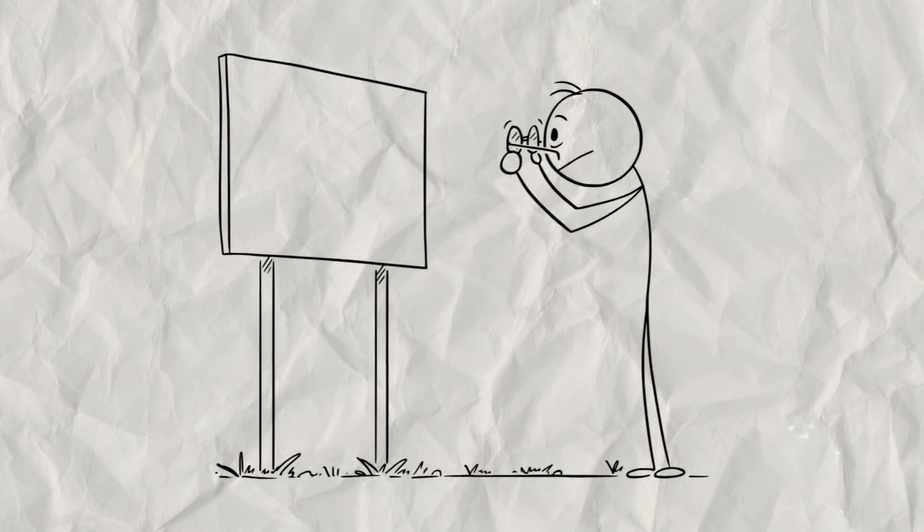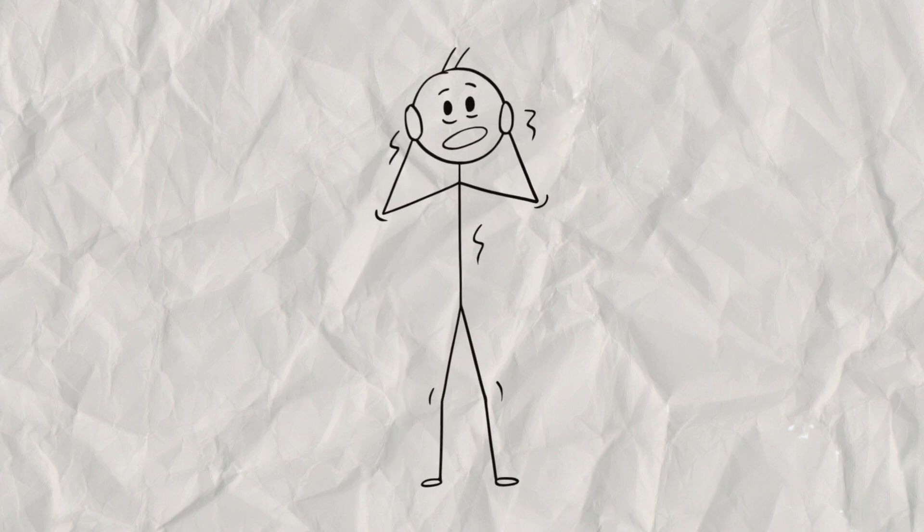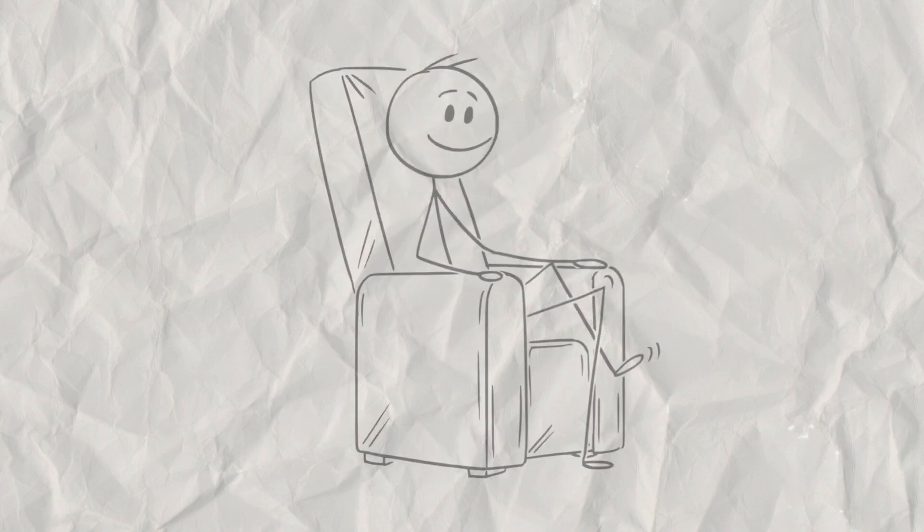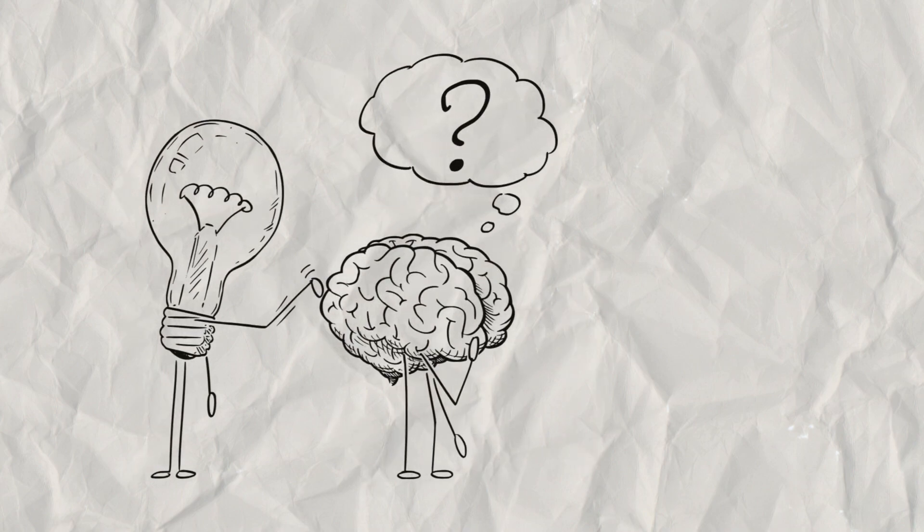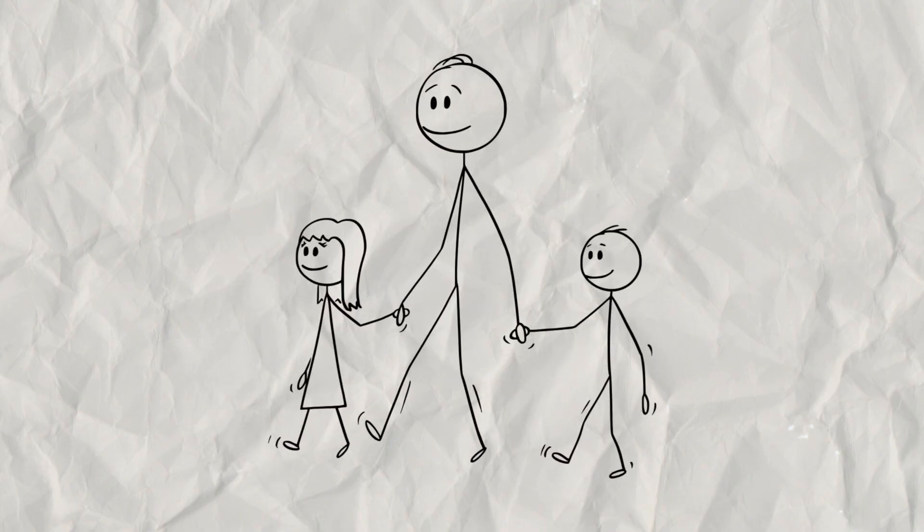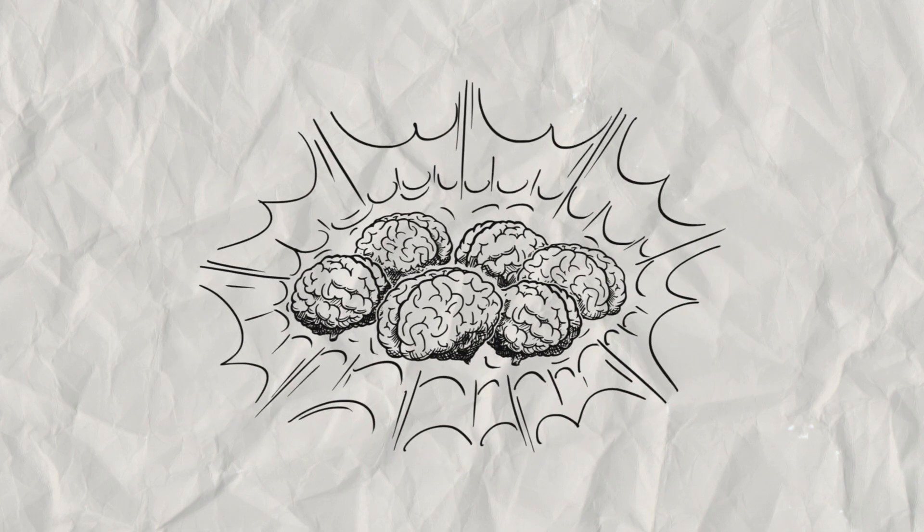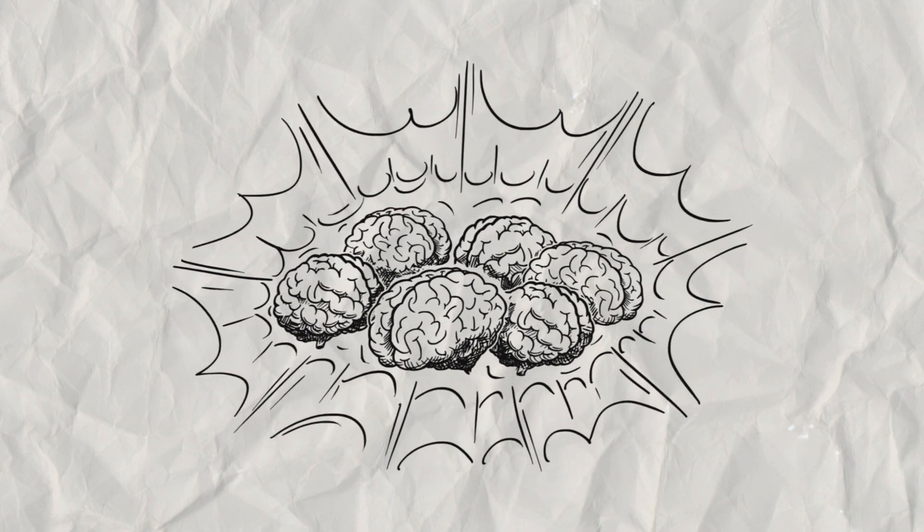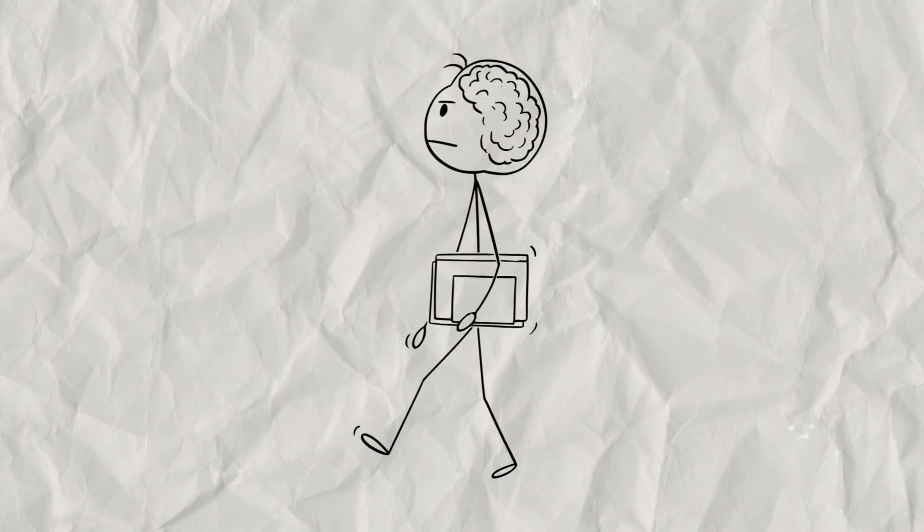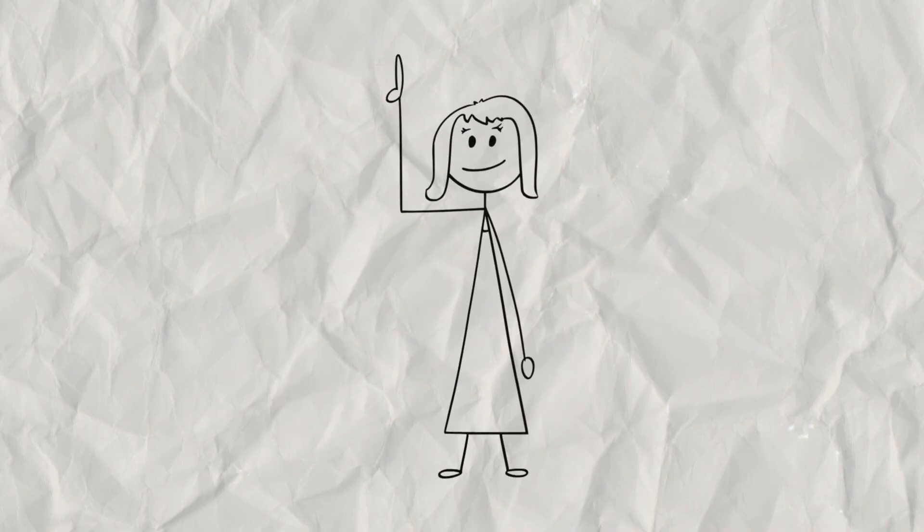Its job is to look at the amygdala's alarm and say, hold on, is this really a threat? Or is it just a car backfiring? It calms you down. Here's the problem. The PFC is one of the last parts of the brain to develop fully. It's still being built throughout your childhood and teens. When the brain is flooded with stress hormones from trauma, the development of that PFC is slowed down. The connections between the calm PFC and the panic amygdala don't form as strongly.